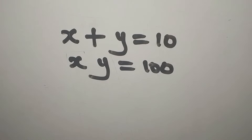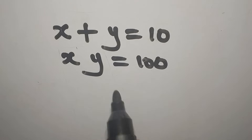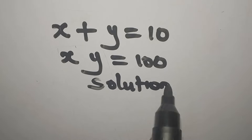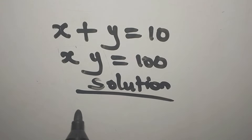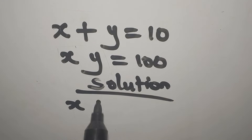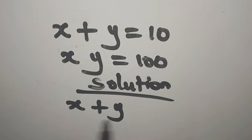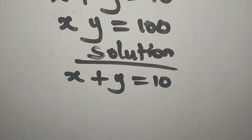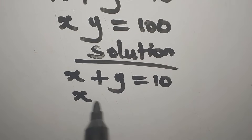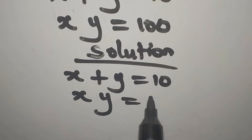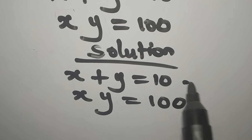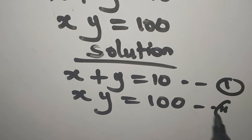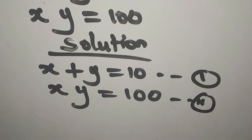Hello everyone, let's provide the solution to this problem very quickly. We have x plus y equals 10 — this is Equation 1 — and x times y equals 100 — this is Equation 2.